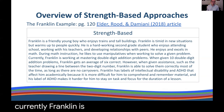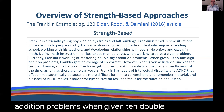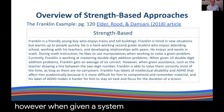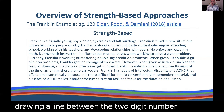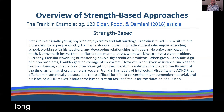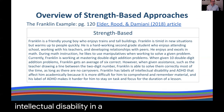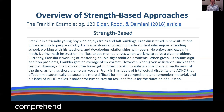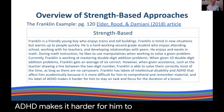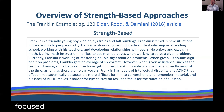Currently, Franklin is working on mastering double-digit addition problems. When given 10 double-digit addition problems, Franklin gets an average of six correct. However, when given assistance — such as the teacher drawing a line between the two-digit number — Franklin is able to solve them correctly most of the time, as long as there are no carryovers. Franklin has labels of intellectual disability and ADHD that affect him academically because it is more difficult for him to comprehend and remember material, and his label of ADHD makes it harder for him to stay on task and focus for the duration of a lesson.